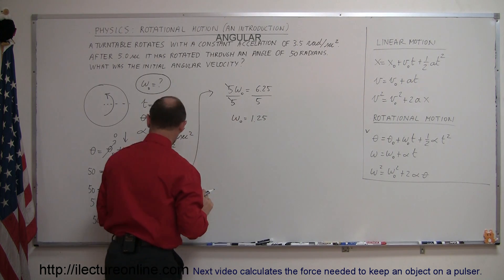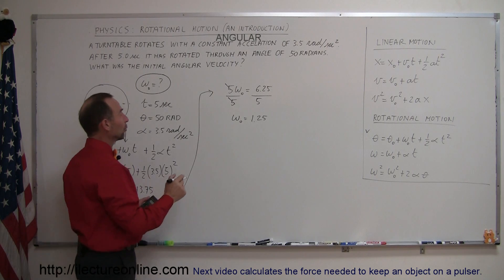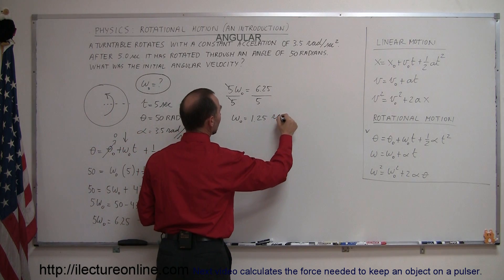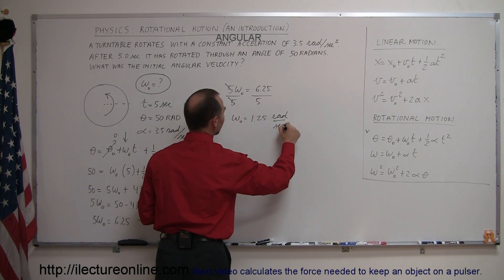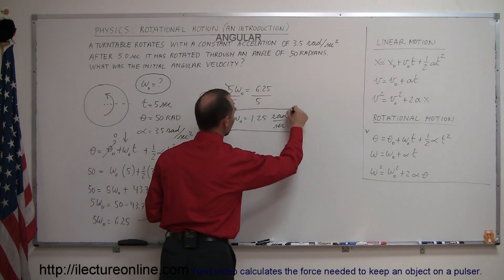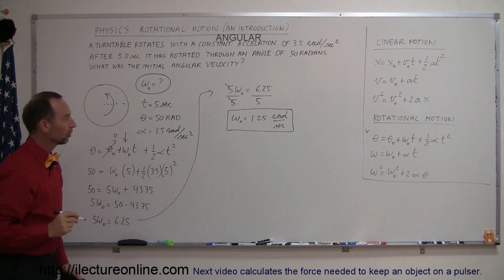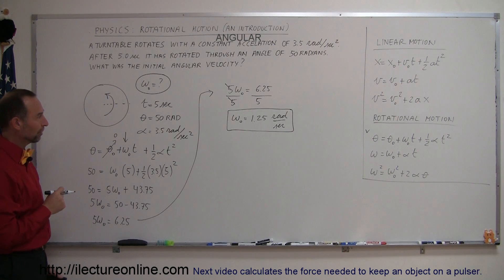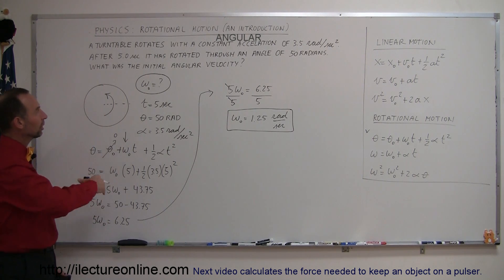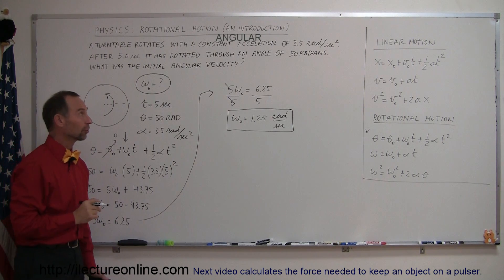Now what are the units? Omega is going to be in terms of radians per second, so we can write radians per second. And there's our answer - the original omega, the original angular velocity was 1.25 radians per second before the object began to accelerate at 3.5 radians per second squared.